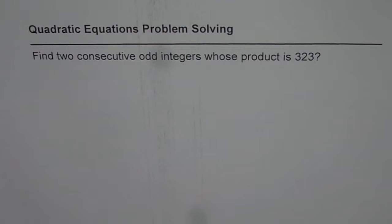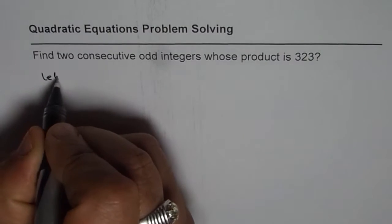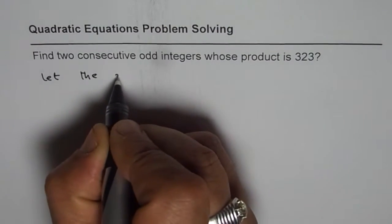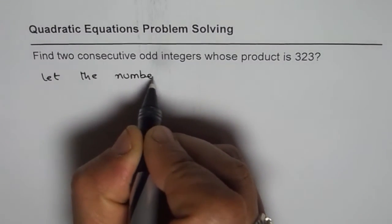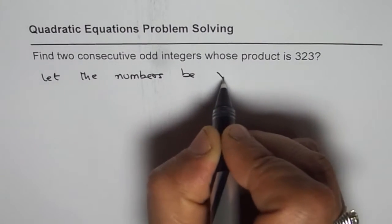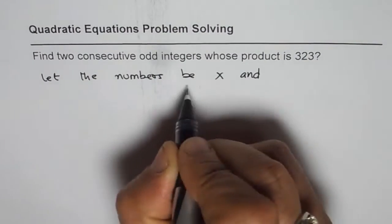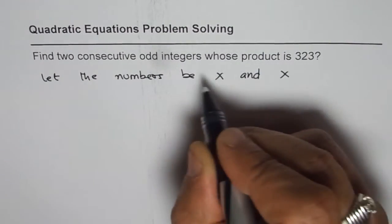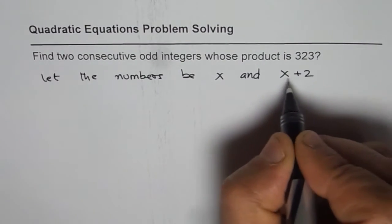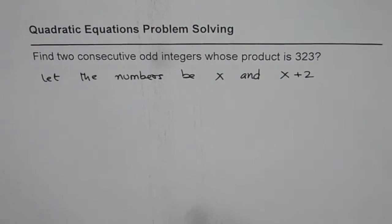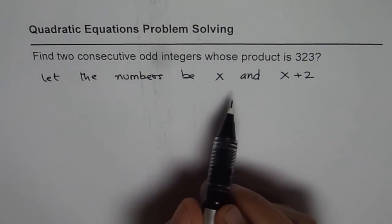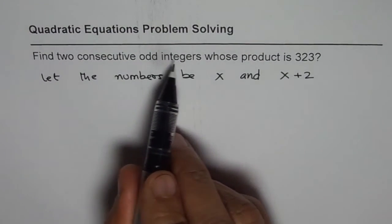Now how are you going to define them as variables? We say, let the numbers be x and, if both are odd or even, in this case we are looking for odd, the other is x plus 2. 3 and 5, so they have a difference of 2. So that is how you can define two consecutive odd integers.